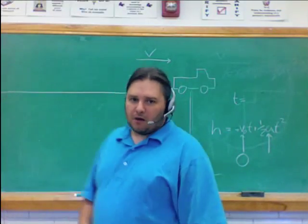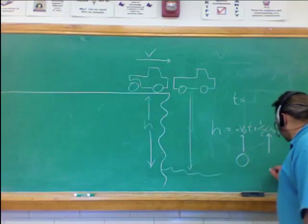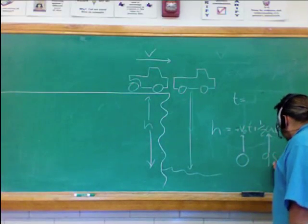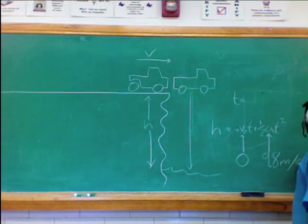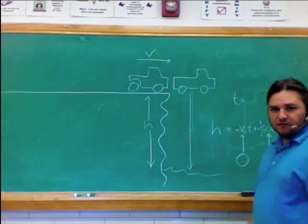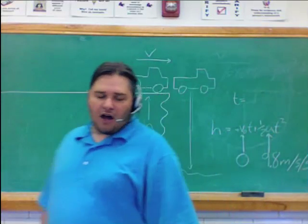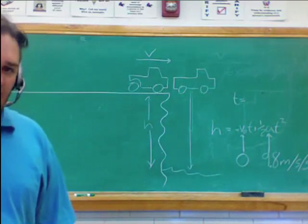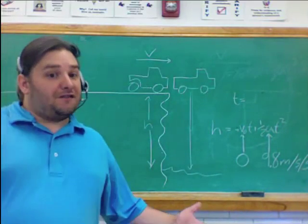However, dealing with metric units, the g, the acceleration due to gravity, is 9.8 meters per second per second. Now, is that a positive 9.8, or is that a negative 9.8?